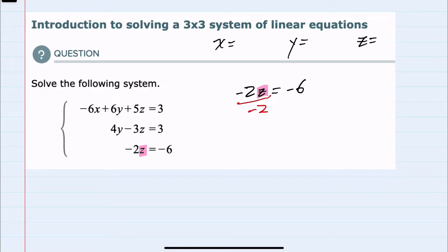In order to divide the left by negative 2, I must also divide the right by negative 2. Canceling the negative 2's on the left leaves me with just the z, and on the right-hand side, negative 6 divided by 2 is 3, so we have solved for one of the three variables.